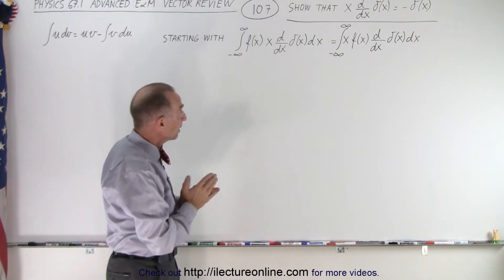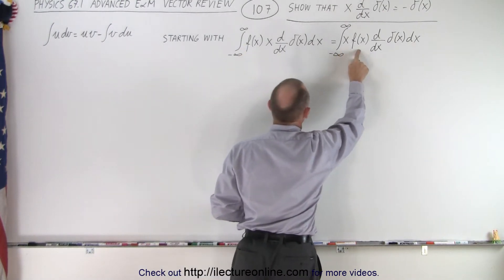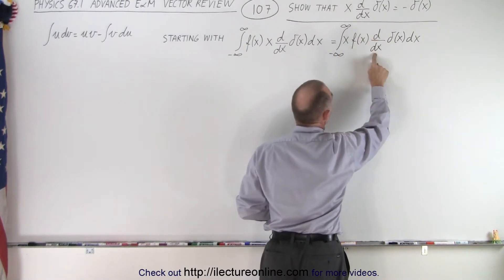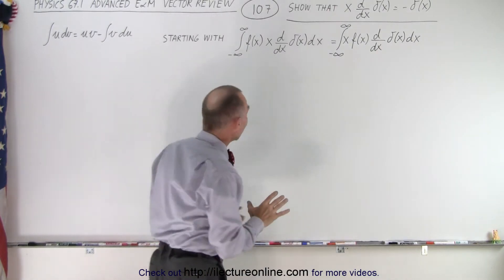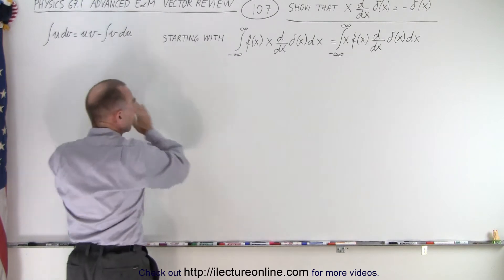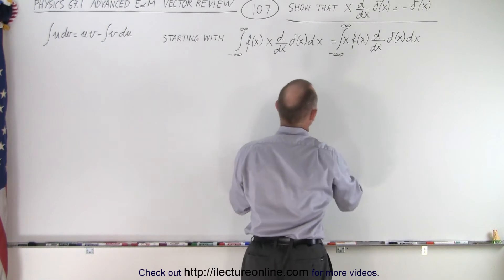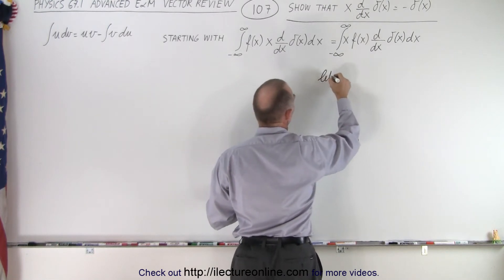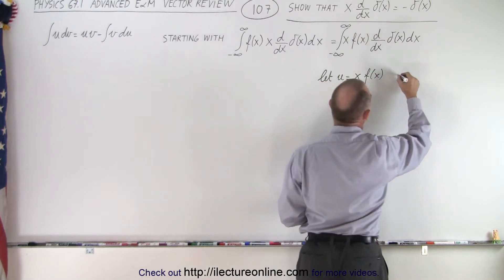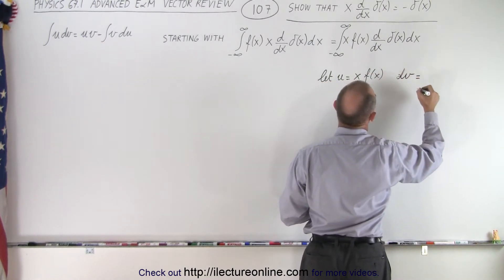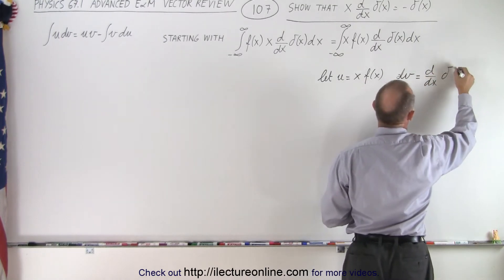We can then write it as follows: take the x and put it in front, writing it as x times f of x times the derivative with respect to x of the delta function, dx. We have to identify which is u and which is dv. We let u equal x times f of x, and let dv equal the derivative with respect to x of delta of x, dx.